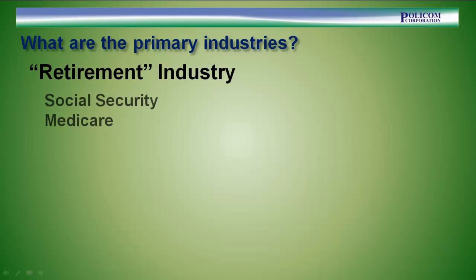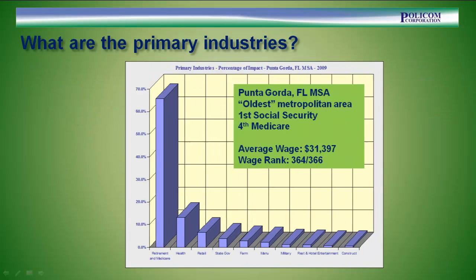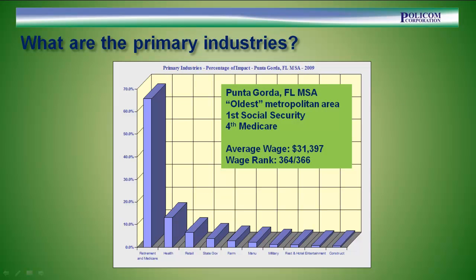Another example is the retirement industry. Entitlements for Social Security and Medicare combine to influence economies throughout the nation. This is the Punta Gorda, Florida metropolitan area, which is the oldest metropolitan area in the country. It has the highest per capita Social Security and the fourth highest per capita Medicare. As you can see, retirement and Medicare entitlements are the largest primary industry in this economy, accounting for 65% of all the imported money to the economy.